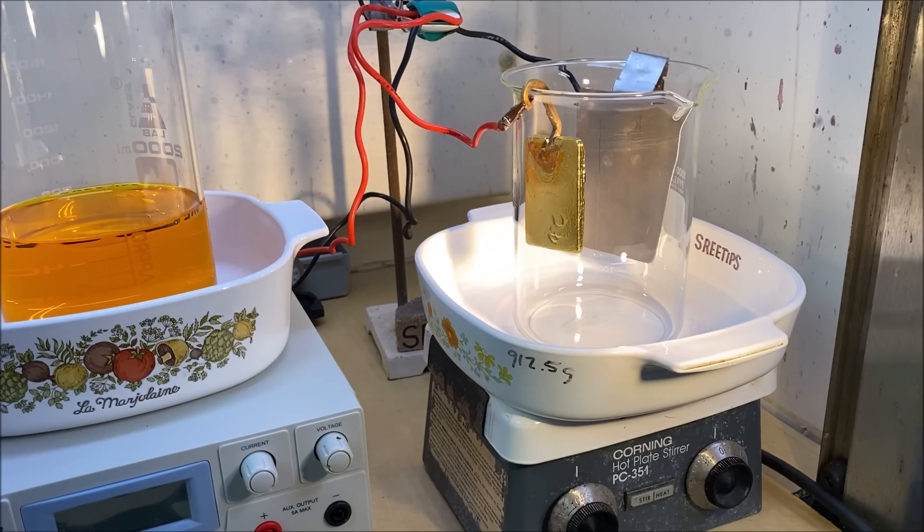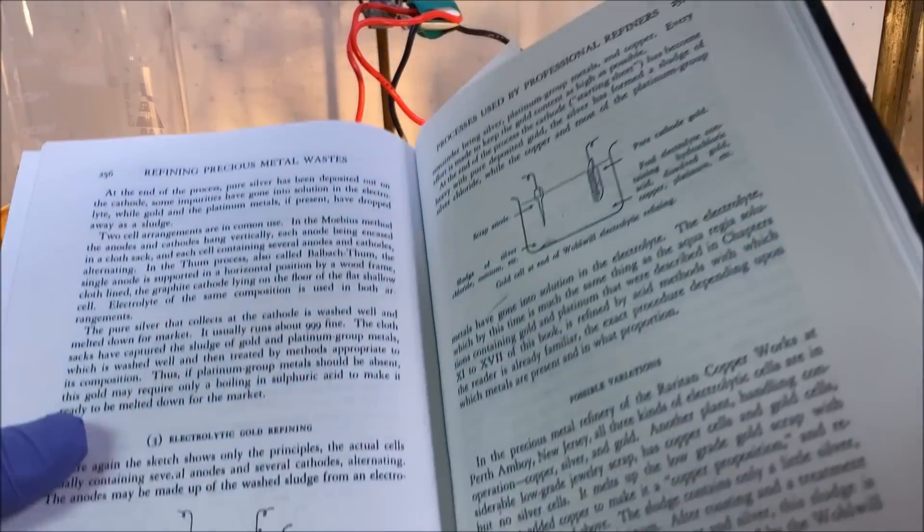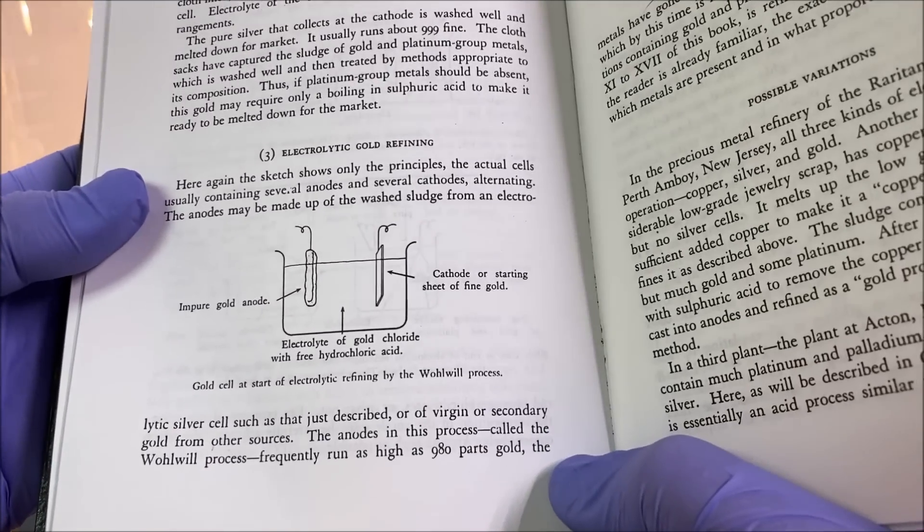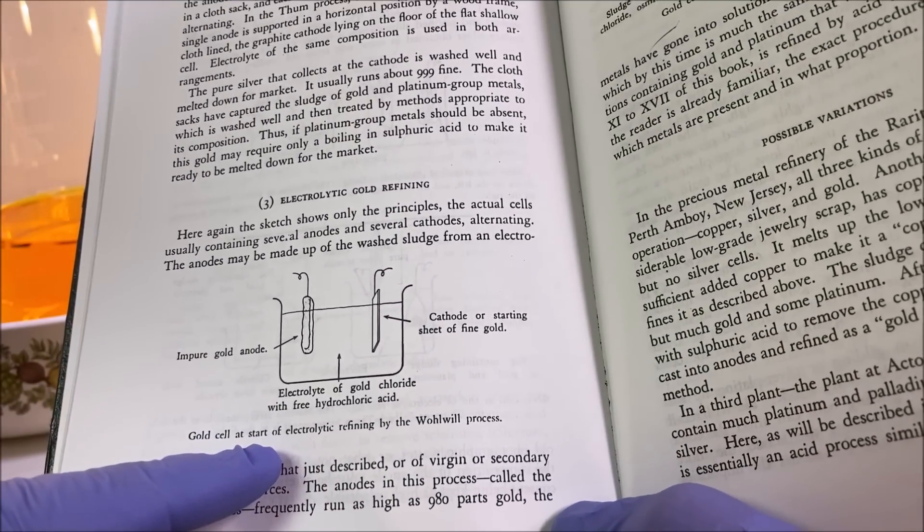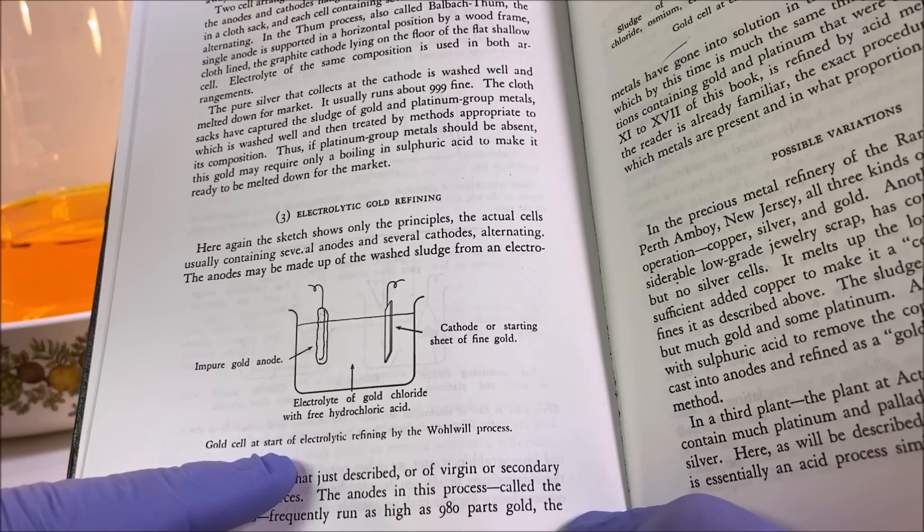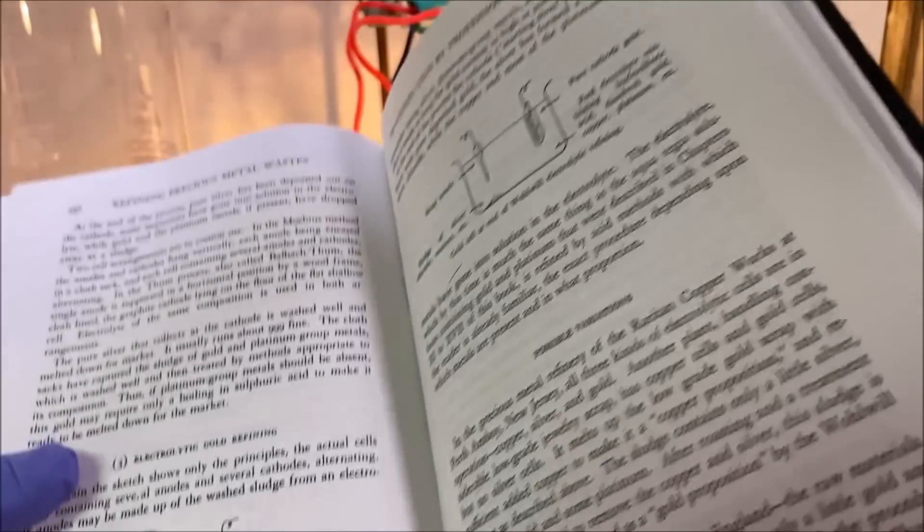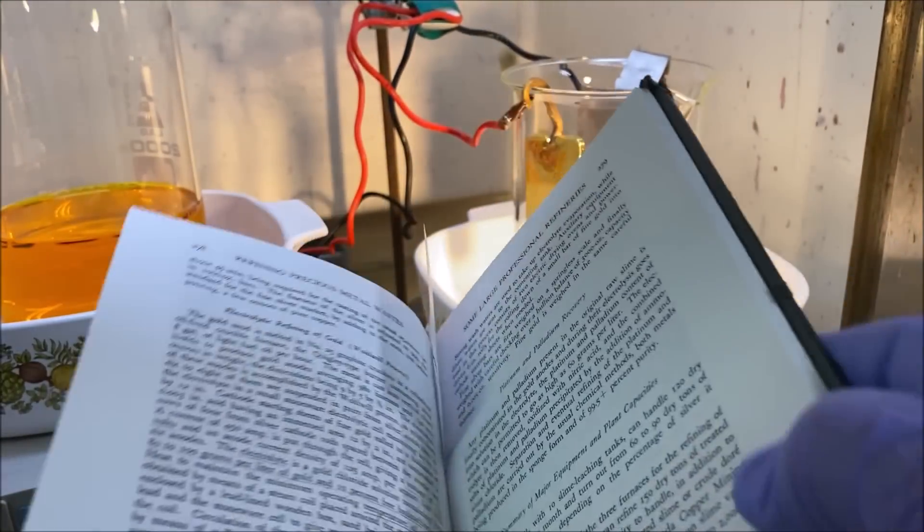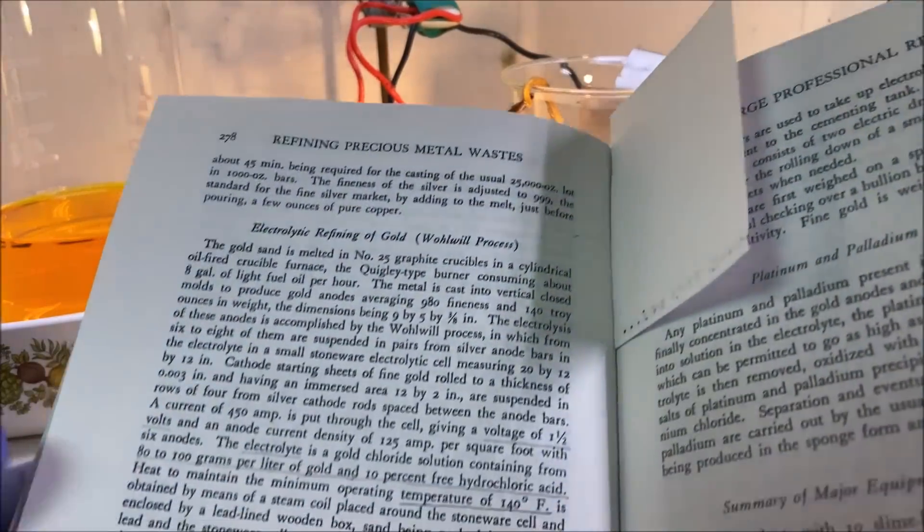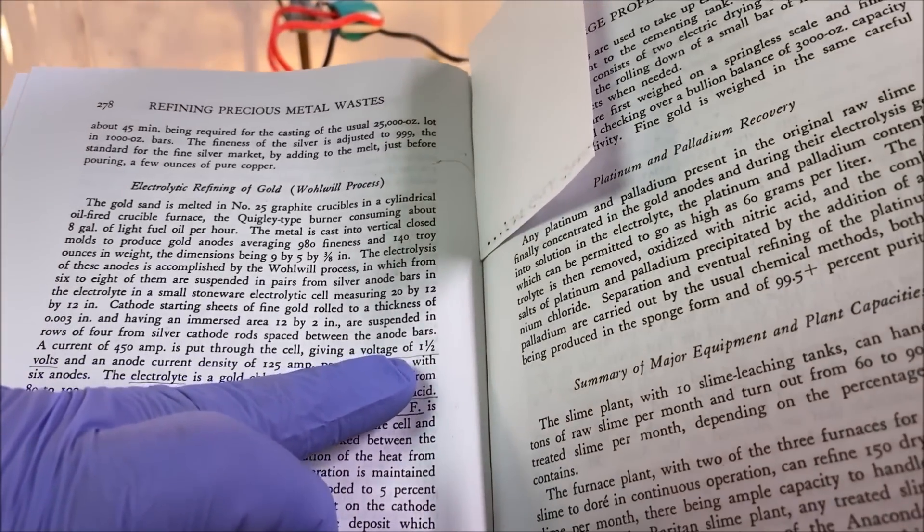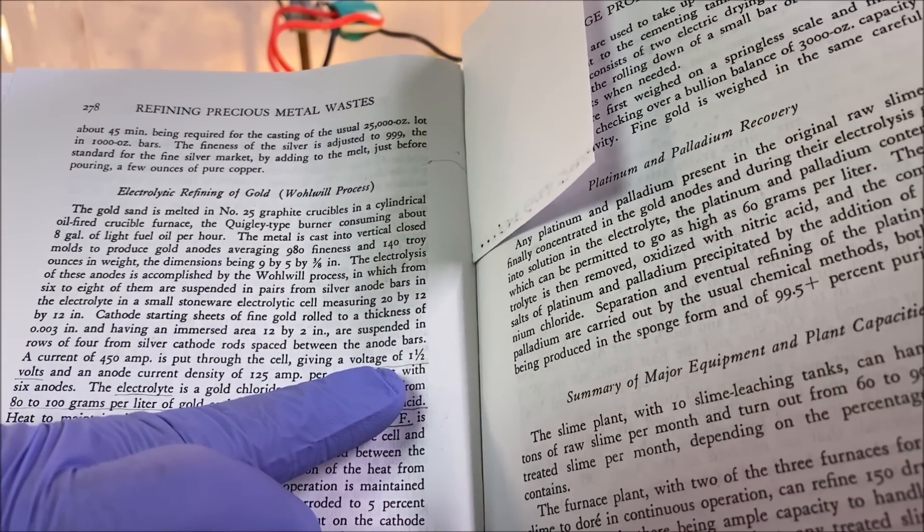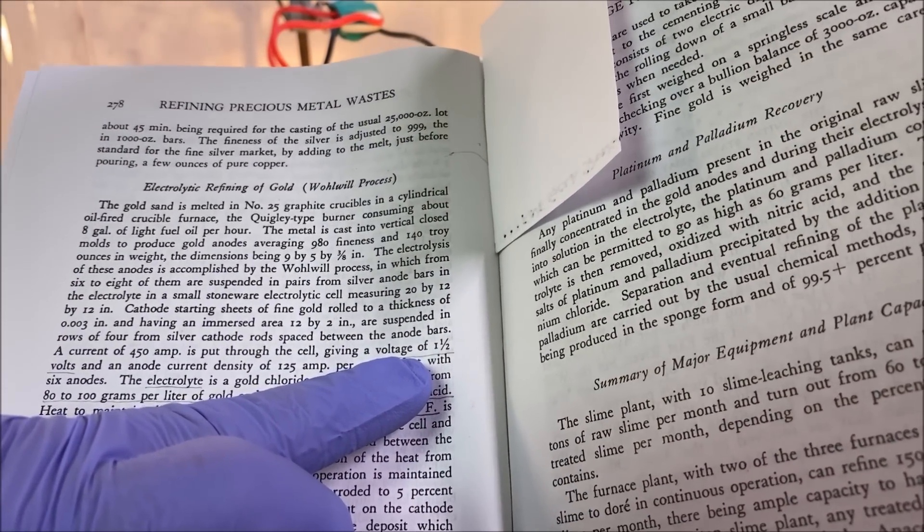Welcome back to part two of the electrolytic gold refining cell. Here's a drawing of what we're trying to achieve with the electrolytic gold cell. This is called the Woolf process, and the procedure for it is right here. We're looking for the main information: one and a half volts DC.